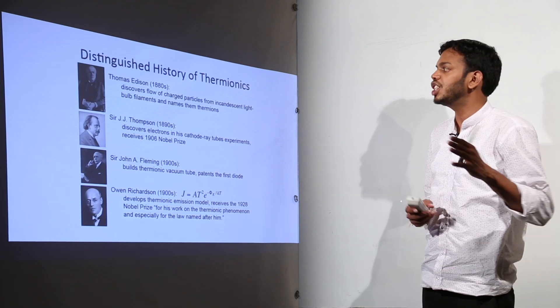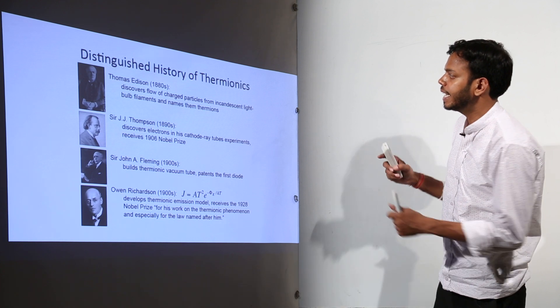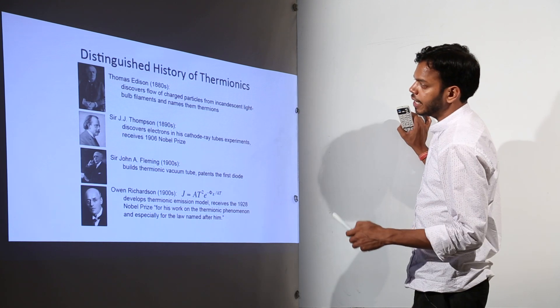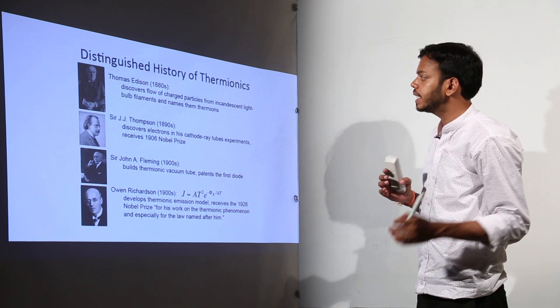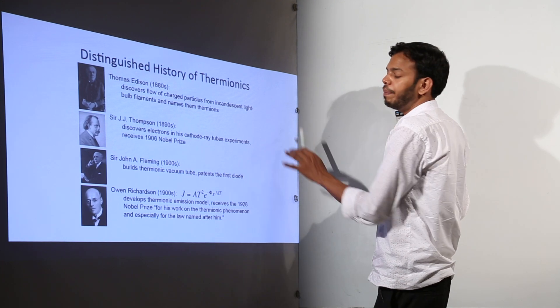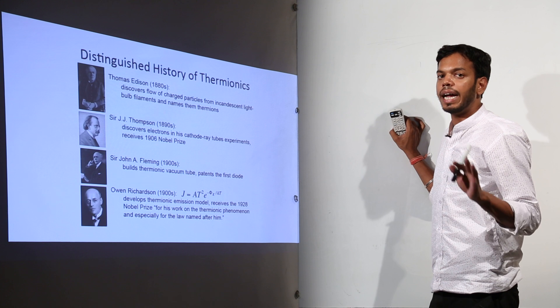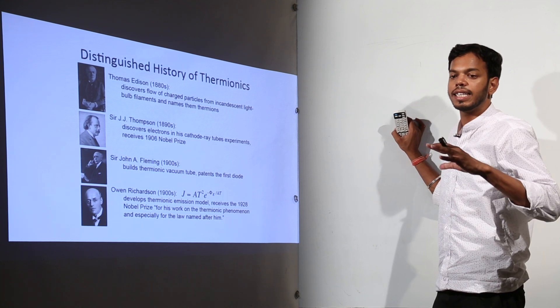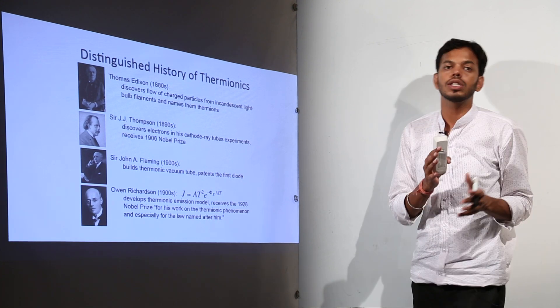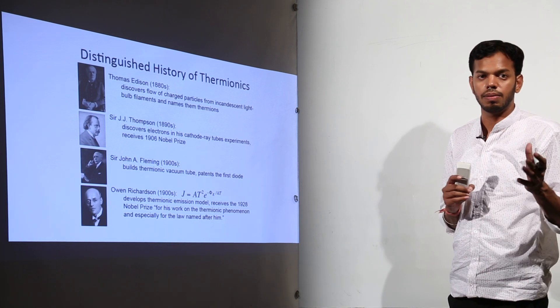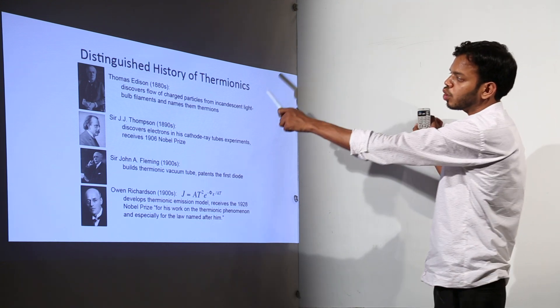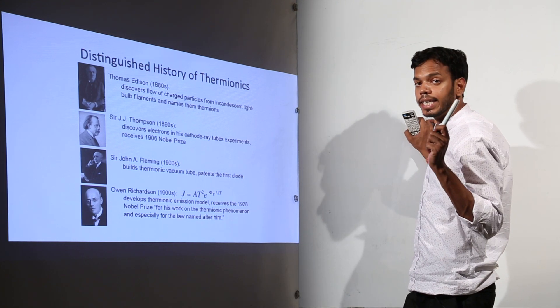Now, I will tell you some historical chart how it came. First of all, Thomas Edison, he discovers flow of charge particles from incandescent light bulb filaments and names them thermions. At that time Edison wasn't aware of the fact that this will be called electrons and electrons are the negatively charged particles. Nothing of that sort was actually discovered till that point. So, Thomas Edison back in 1880s.